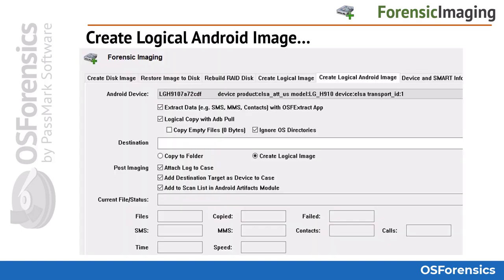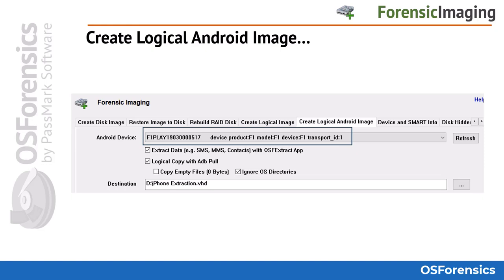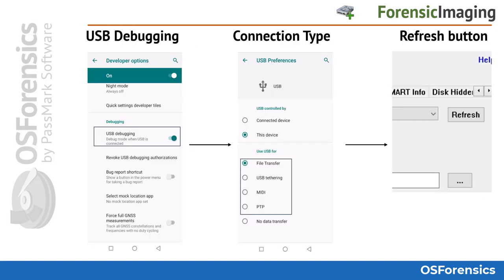The next tab is the Create Logical Android Image tab. OS Forensics allows users to generate logical extractions from Android devices. Once you have connected an Android mobile device to your computer, you will need to ensure Windows and OS Forensics recognizes the device. It will need to be placed into developer mode with USB debugging enabled — if you cannot enable USB debugging on the device, this feature will not work. Once in USB debugging mode, connect the device and make the correct connection type selection when prompted on the handset.